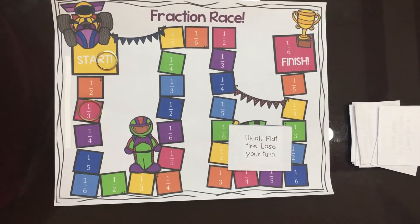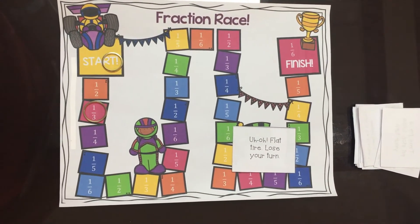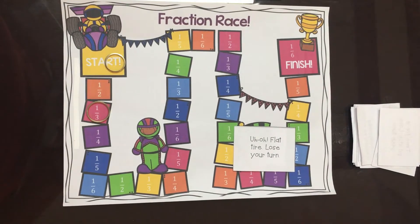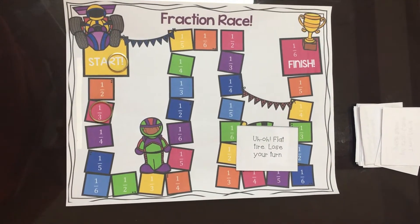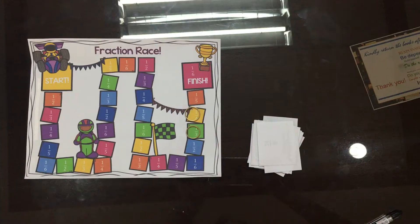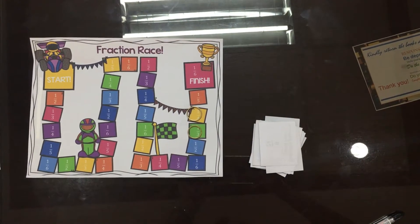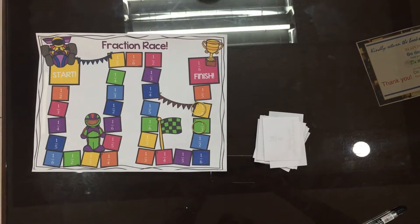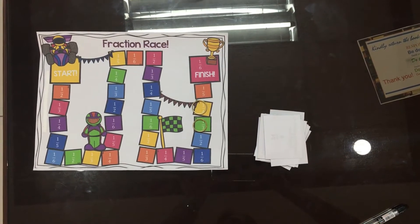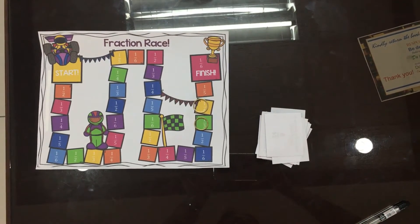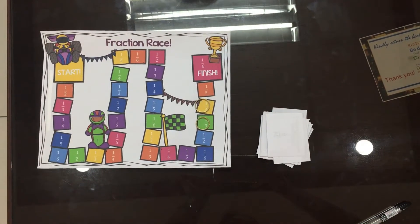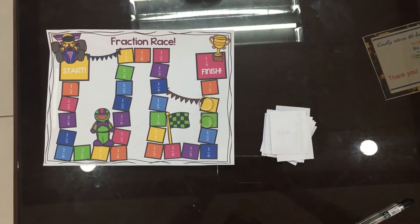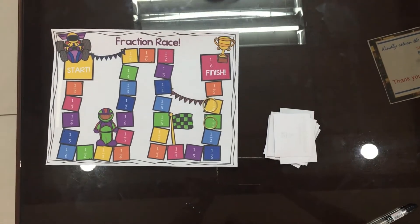If a player draws the flat tire or pit stop card, they lose their turn and it moves to the next player. The first player to make it to the last square by simplifying a fraction equal to one over six wins the game.